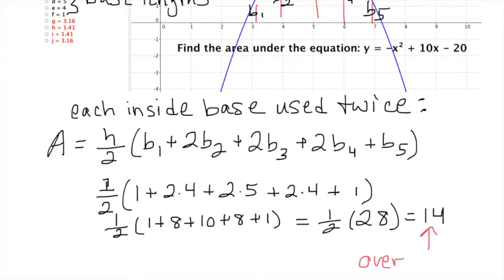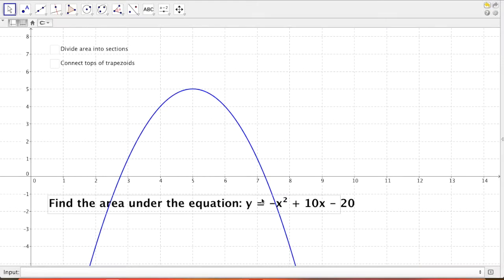The question is, is this an over or an under approximation of the actual area? And so to do that we're going to actually have GeoGebra sketch in our trapezoids. You can do this by hand too, but I've given you some animations here to hopefully help you see it a little clearer.